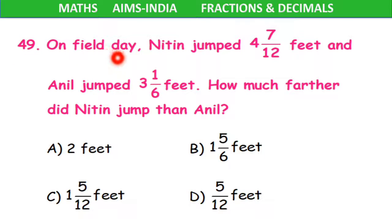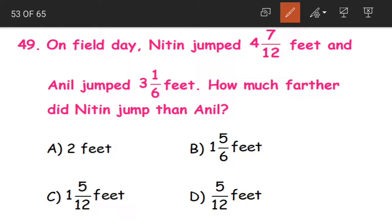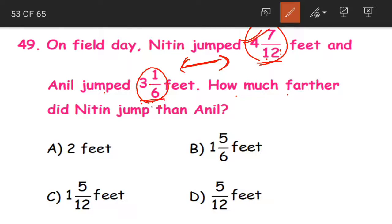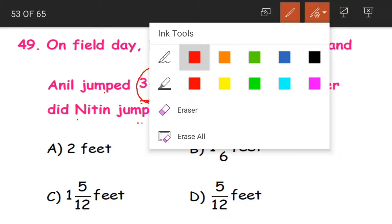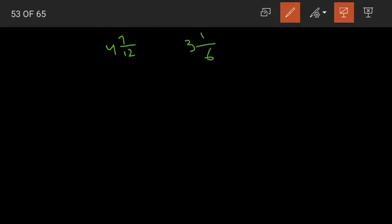Next question 49. On field day, Nitin jumped 4 and 7/12 feet and Anil jumped 3 and 1/6 feet. How much farther did Nitin jump than Anil? The distance jumped by both Nitin and Anil is given. Nitin has jumped more than Anil, so we have to find how much farther — that is, we have to find the difference between the two numbers. Let us convert them into improper fractions first.